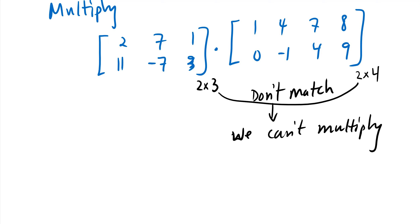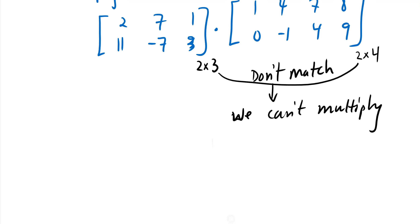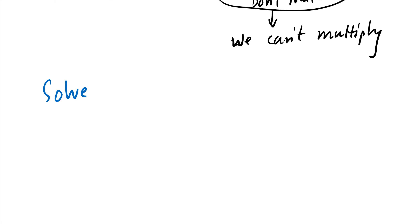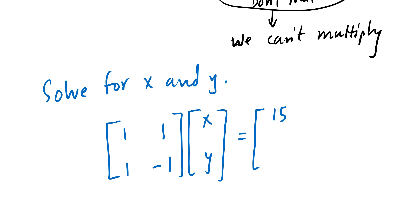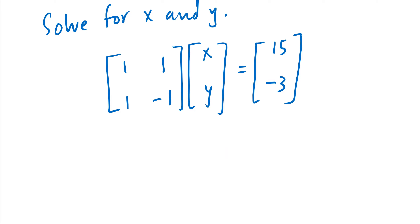Since they don't match, we cannot multiply. Now, let's see how we can apply matrix multiplication to a problem. Suppose we're asked to solve for x and y in the equation: the matrix [1, 1; 1, -1] times the matrix [x; y] equals [15; -3]. I can't directly compare the left and right sides yet because there's a multiplication operation on the left side — I need to multiply first.